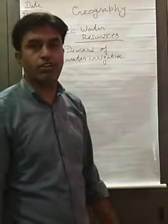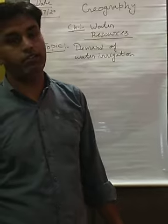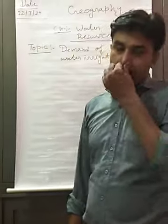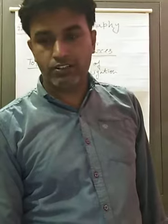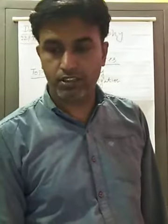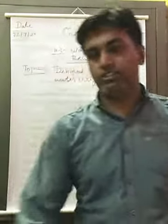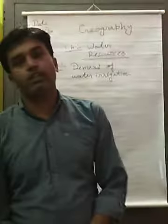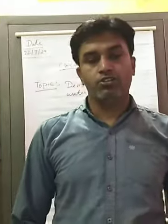Let's start today's class in geography. As you know, we learned the chapter of water resources, and today's topic is demand of water for irrigation. Yesterday's topic was water utilization, and now we move to our today's topic which is demand of water irrigation. Today we look at the irrigation process, especially how water is used in the agriculture sector.